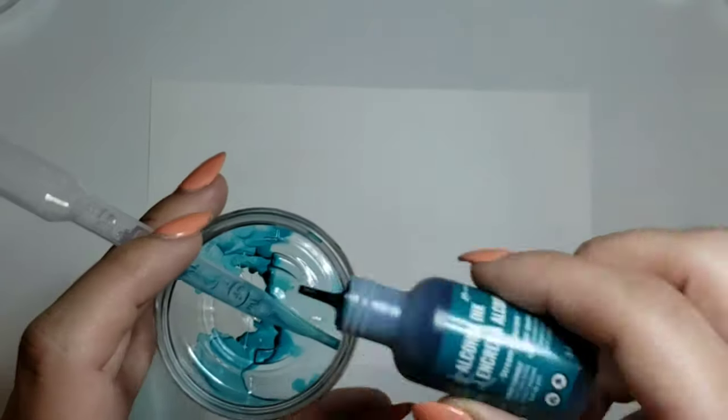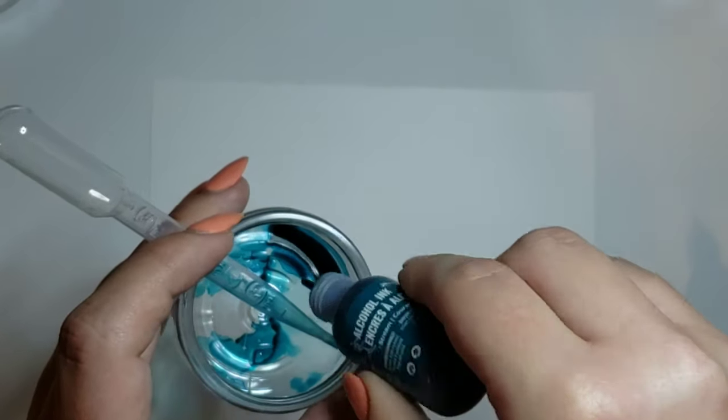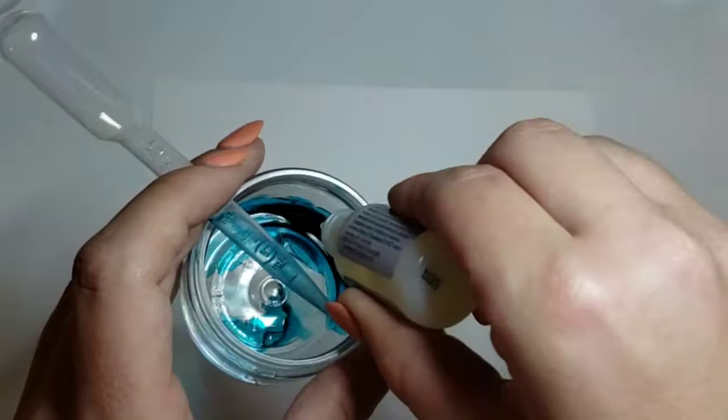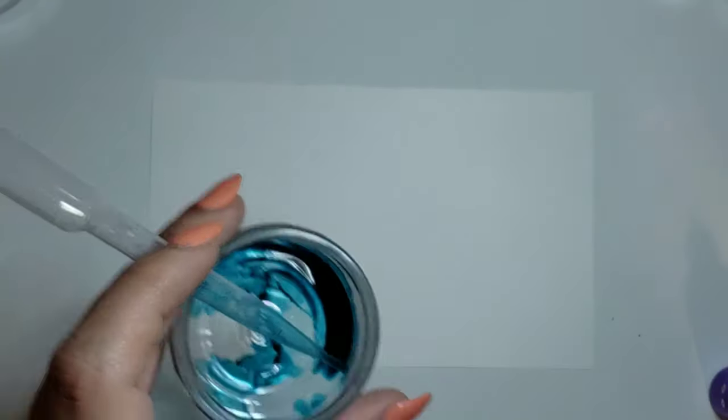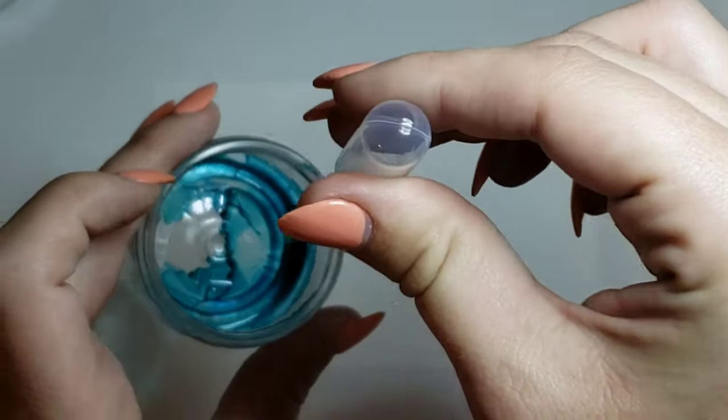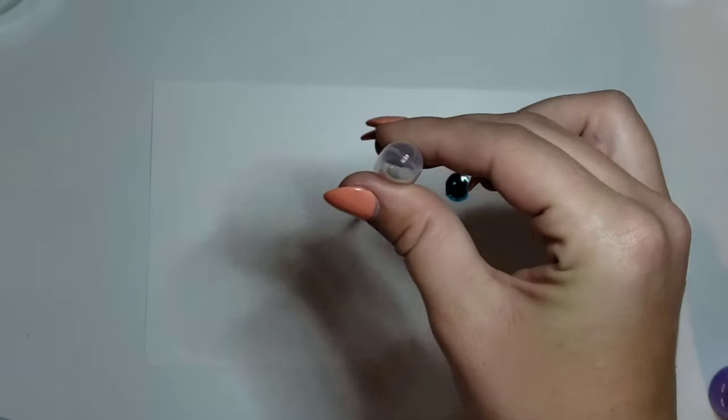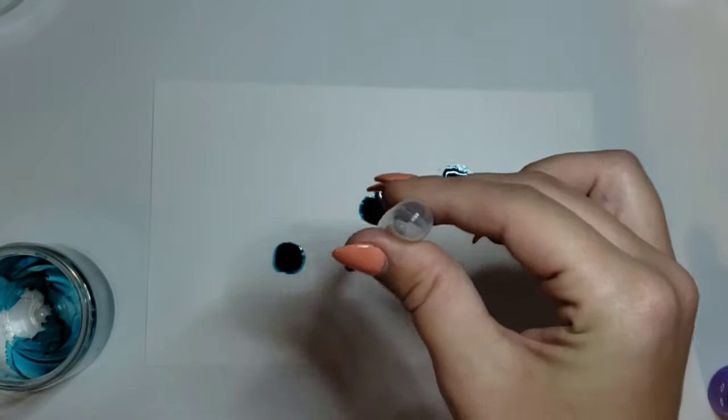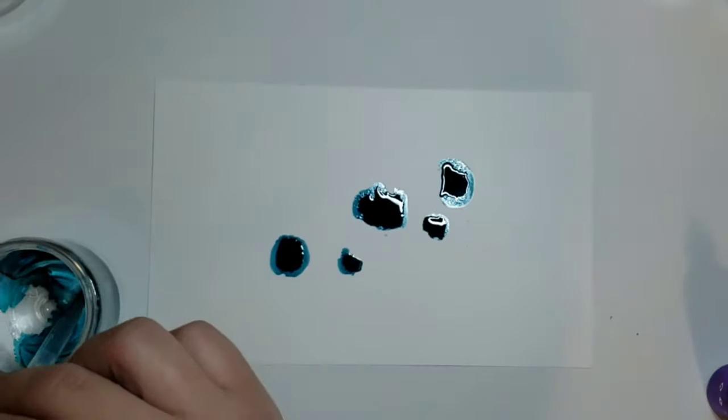When using alcohol inks you're going to want to have the actual ink, and then you're going to need an alcohol to dilute it and to add on top. I'm using the blending solution here since that came in the kit, but later on I'm actually going to use this rubbing alcohol I got from the drugstore. It's 91% isopropyl alcohol and basically anything over 90% will work well.